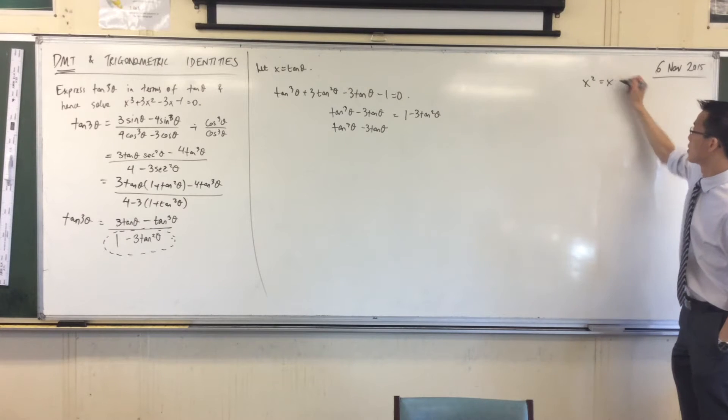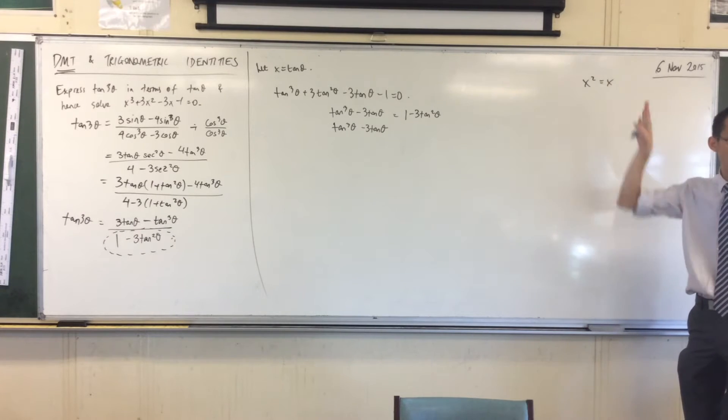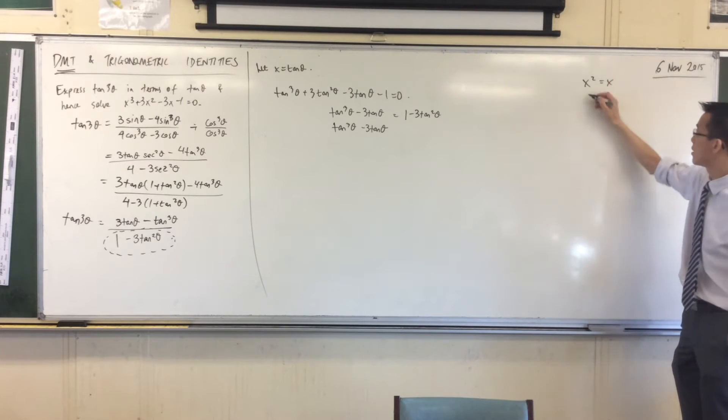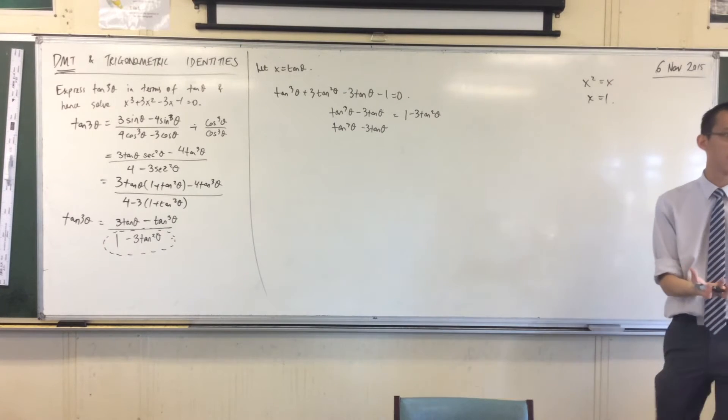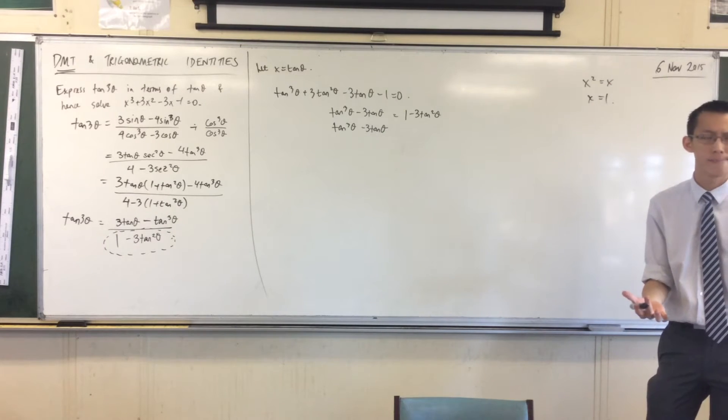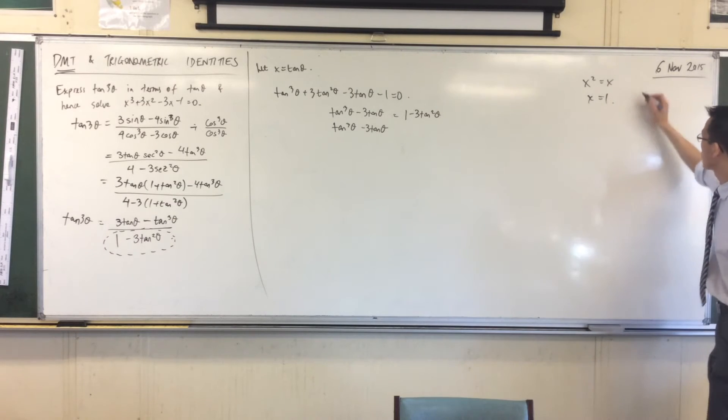Just like if I gave you this, which has two solutions. If I divide through by x in this case, I get a solution, it's an actual solution, but I've lost the solution. What have I lost? X equals zero. I've lost x equals zero when I did that.